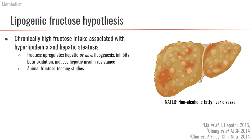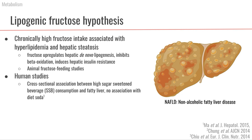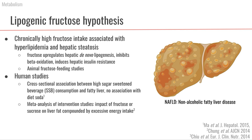However, most of this data comes from animal feeding studies using high amounts of fructose, which differs from how free-living humans consume it. In human studies, some cross-sectional data show an association between high sugar-sweetened beverage intake — which contains a lot of high-fructose corn syrup — and fatty liver, but not with diet soda. However, a meta-analysis of many intervention studies found no strong impact of fructose and could not separate the effect of fructose from excessive energy intake overall.